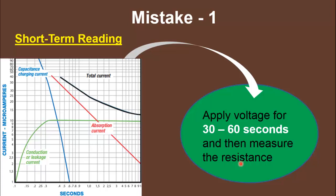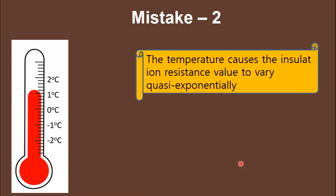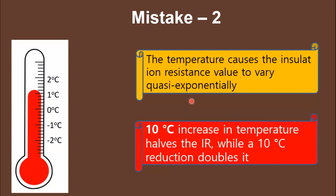That incorrect reading does not reflect the true insulation condition of the tested machine. The second — and most important and common — mistake is the effect of temperature while performing the Megger test. Temperature causes the insulation resistance value to vary quasi-exponentially. As a rough rule, a 10°C increase in temperature halves the insulation resistance measurement.